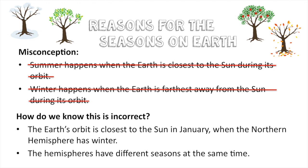The other piece of evidence is that the hemispheres have different seasons at the same time. In January the whole Earth is closest to the Sun in its orbit, so both parts of the Earth should have summer, but only the southern hemisphere has summer. The northern hemisphere has winter, so it has to be something other than how close or far away the Earth is.